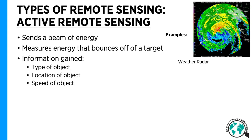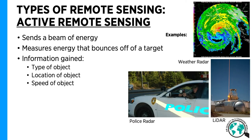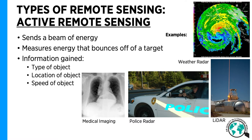Some examples include weather radar, that's one we're probably pretty familiar with. LiDAR, which is a laser beam, and police radar is also a form of remote sensing, because they're measuring the speed of your car. And also medical imaging is remote sensing, because they're sending energy, such as x-rays, through your body to take a picture of what's inside you, without actually inserting any kind of object into your body.